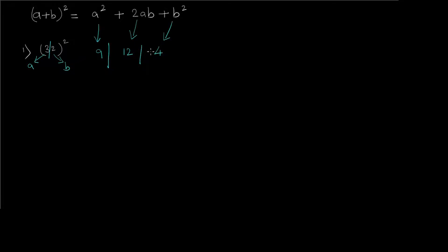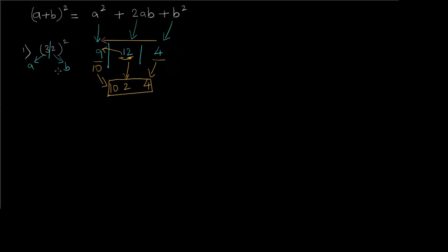To calculate the final answer we go from right to left across these three terms. For the rightmost term we take only one digit — here it's just 4, so we write 4. From the center term we take the rightmost digit, which is 2, and carry the remaining digit (1) to add to the leftmost term. So 9 + 1 = 10, and we write it as is. So 32² = 1024.